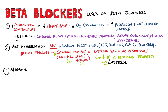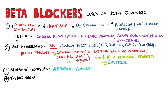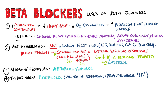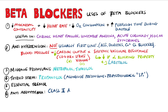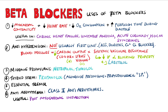Beta-blockers can also be used for migraine prophylaxis, with examples including metoprolol and timolol. The catecholamine crisis seen in a thyroid storm may also be treated by beta-blockers — specifically, propranolol is used alongside prednisone and propylthiouracil, a combination known as the three Ps. Beta-blockers can also be used as a treatment for essential tremors, and finally they can be used as antiarrhythmic agents. Specifically, they are class II antiarrhythmics, often used post-myocardial infarction where there is a high risk of arrhythmia.